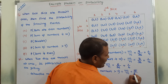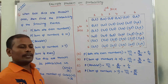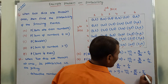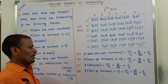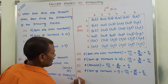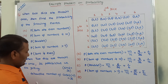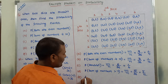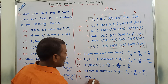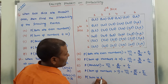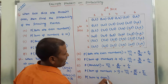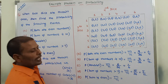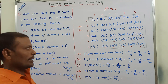The favorable number of cases is 15 and the exhaustive number of cases is 36. So the probability is 15 by 36, equal to 5 by 12. Next, the last part — Bit E: probability of getting sum is even. That is equal to favorable number of cases divided by exhaustive number of cases.